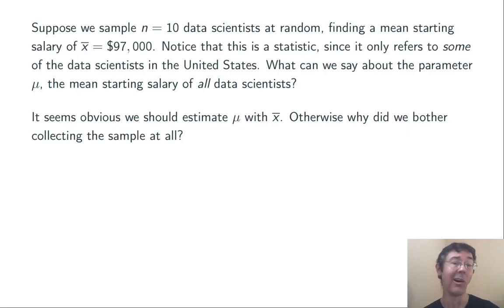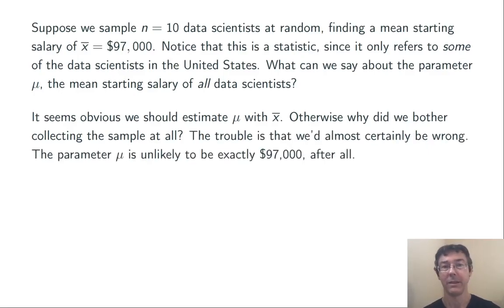The trouble is that that guess is almost certainly wrong. The parameter mu is unlikely to be exactly $97,000. It might be a tiny bit higher or a tiny bit lower. Potentially, it could be a lot higher or a lot lower.